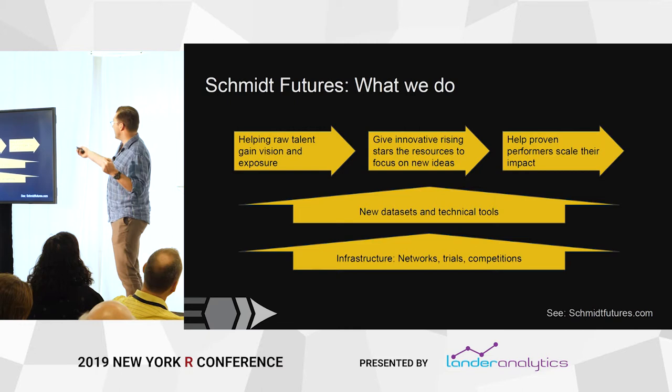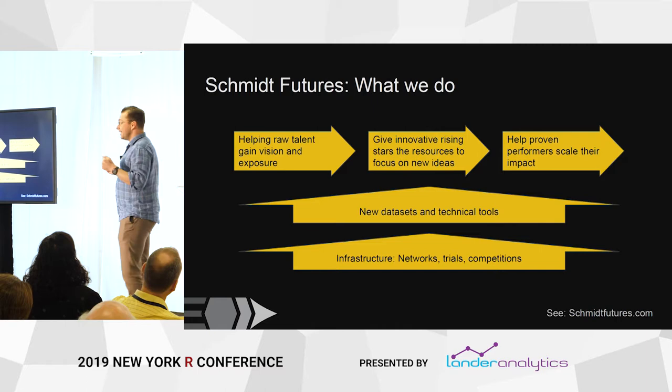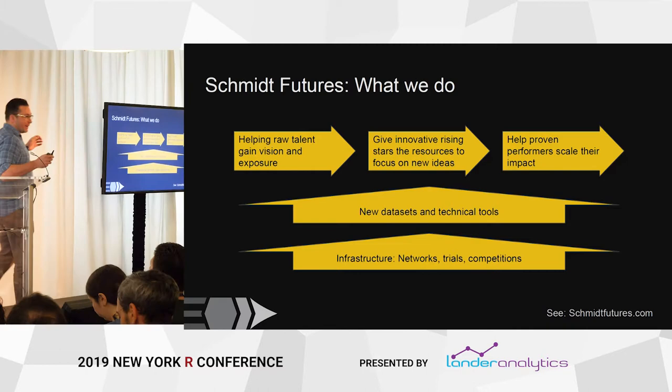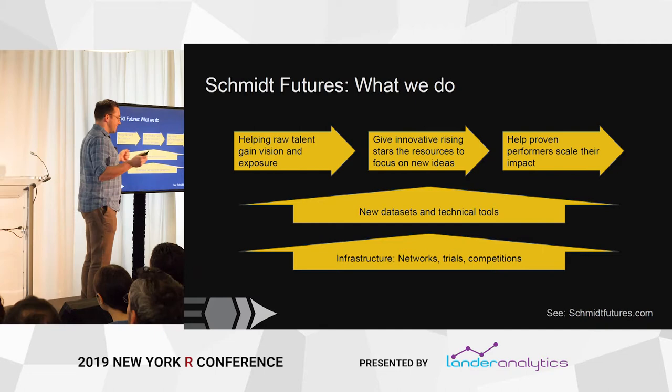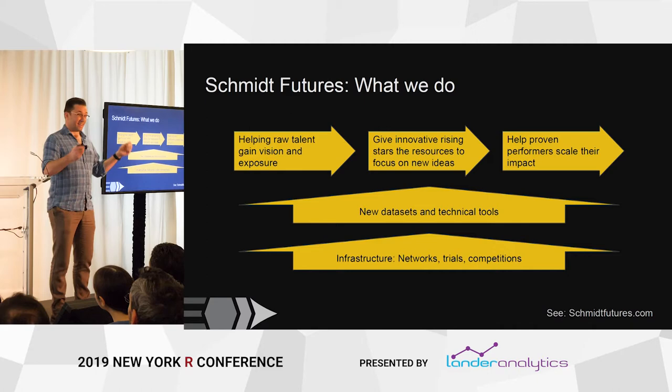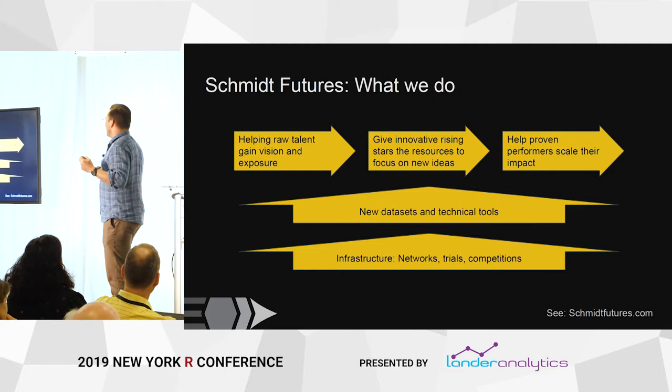An example of an innovative rising or mid-tier talent program is our Schmidt Science Fellows. We basically get 20 of the world's smartest scientists — these are post-docs — and we pay them to change fields. We take a physicist and put them in a cancer lab; they get training and a really good stipend, about double what you'd get in a typical post-doc.